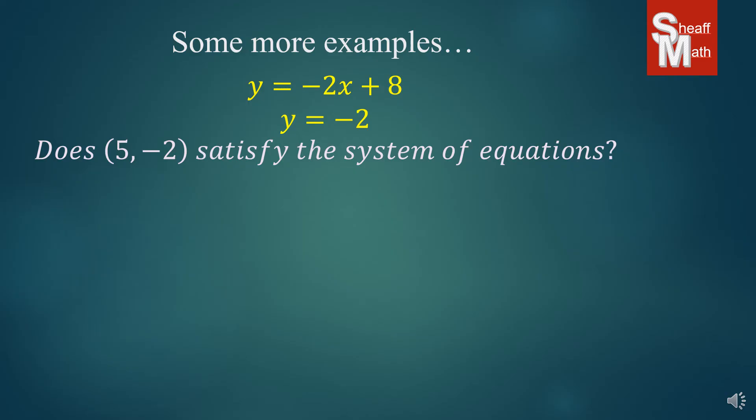Here's the question. Does (5, -2) satisfy the system of equations? So I'll take the first equation, put 5 in for x, -2 for y, make sure you get those numbers right, and we're going to simplify. -2 equals -10 plus 8, and -10 plus 8 does equal -2, so that is a yes.